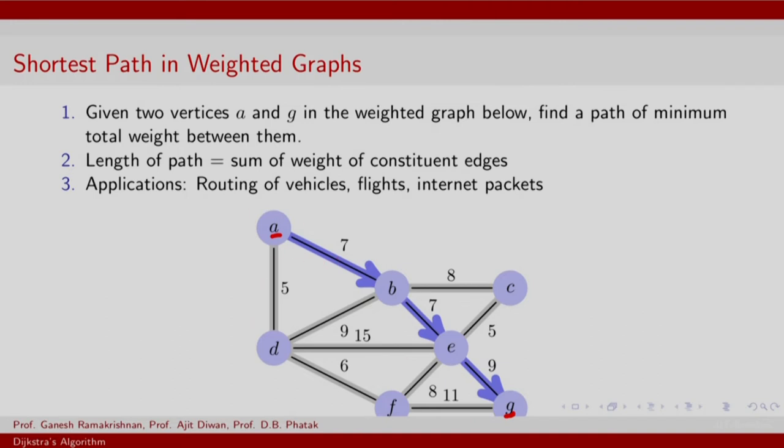The length of a path is the sum of weight of the constituent edges and this has several applications such as routing of vehicles. The weight could denote length of a particular road. It could also denote the time required to get from A to B based on congestion conditions. One could look at flight routing, internet packets in IP networks and so on.